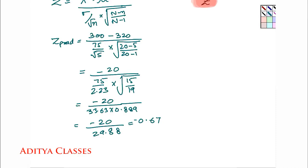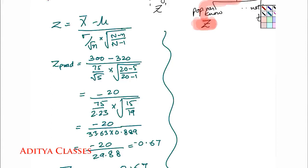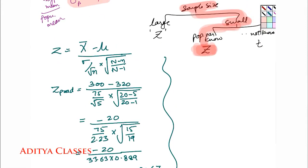So our z practical comes out as minus 0.67. We will ignore the minus because we are more concerned with the value other than direction.